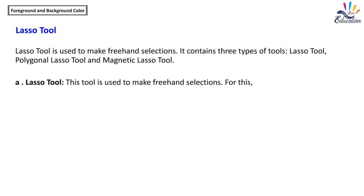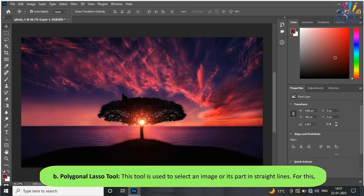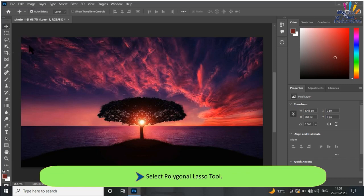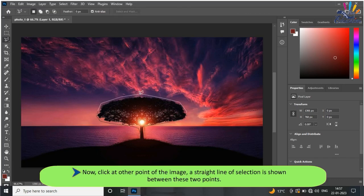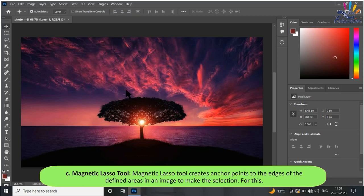Lasso tool is used to make freehand selections. It contains three types: Lasso tool, Polygonal Lasso tool, and Magnetic Lasso tool. The Lasso tool makes freehand selections — select it, then click and drag the mouse around the image to select it. The Polygonal Lasso tool selects an image or its part in straight lines — select it, click where the selection begins, then click at other points of the image; a straight line of selection is shown between the points. Continue clicking to complete the selection.